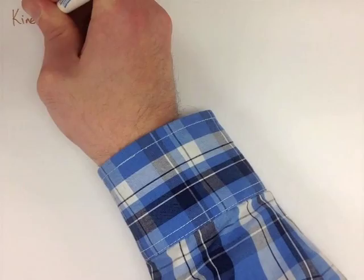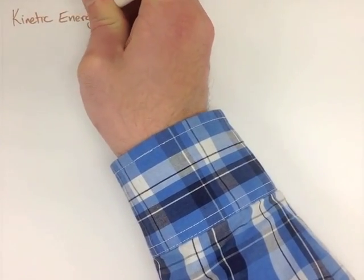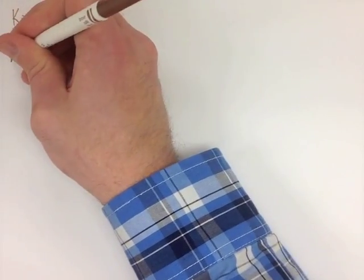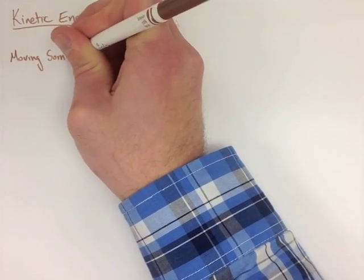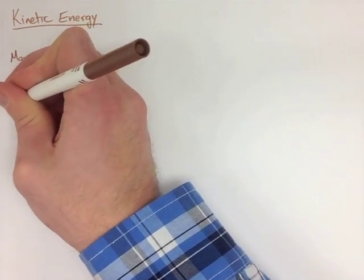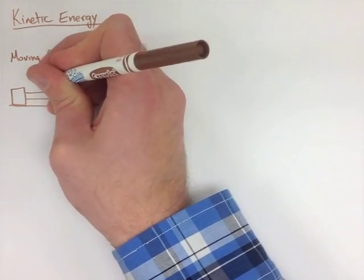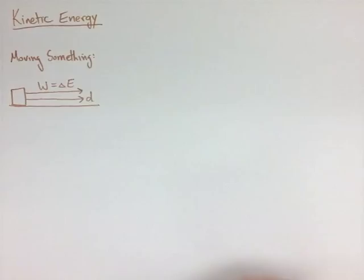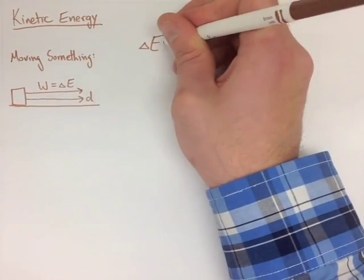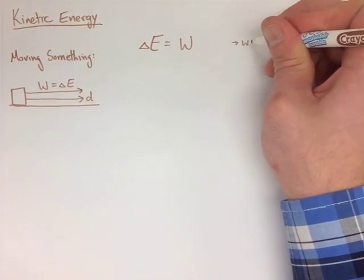When we're talking about kinetic energy, we're talking about the energy from movement. We have to remember that work is the change in energy. When we're talking about movement, we're going to go over some distance and apply some work, and we're always going to consider one of our velocities, our starting velocity, to be zero.